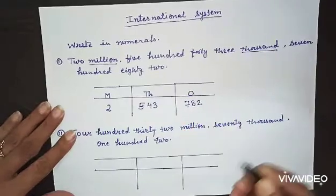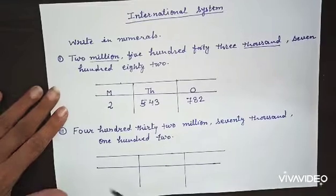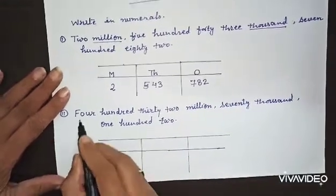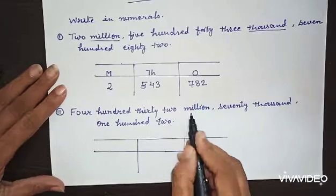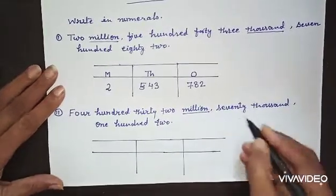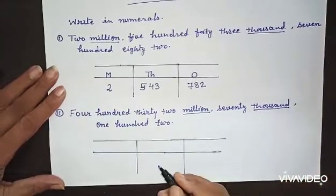I think so it is clear, but again we will solve one more problem here. Let us read: four hundred thirty two million. Again we will underline million here. Seventy thousand. Thousand is also very important for us. One hundred two.